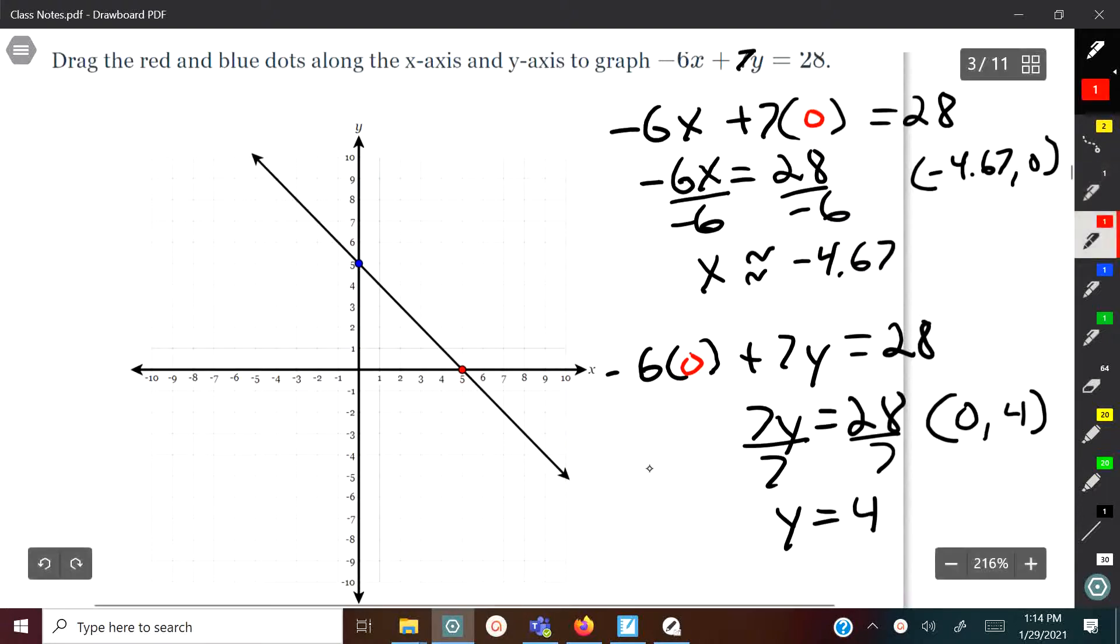We're going to graph. I'm going to graph this one first. X is negative 4.67, you're going to come about here somewhere, a little bit past midway. And then on this one, on the y-axis, we're going to go up zero, four, and then draw a line.